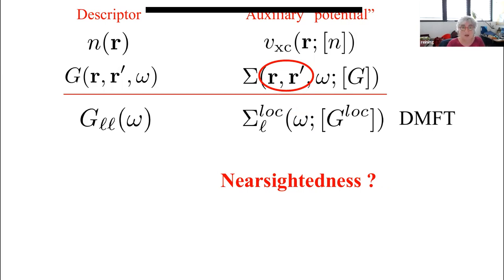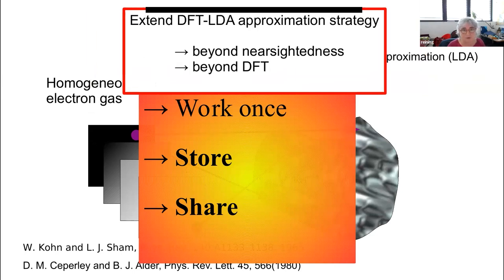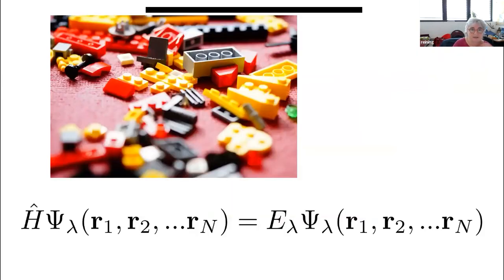You don't know what is the point r at which you should take your model, because there is also point r' — so it's not so straightforward. But definitely what we want to do is learn from the very successful local density approximation in DFT and related approximations, and enlarge the concept of working once, storing, and sharing results — going beyond nearsightedness and also beyond density functional theory.